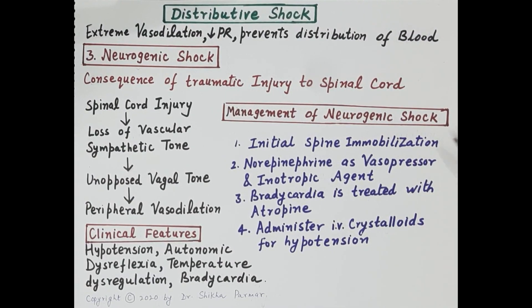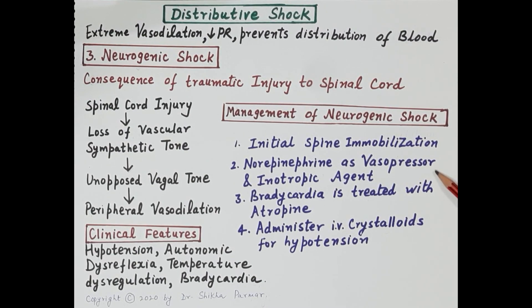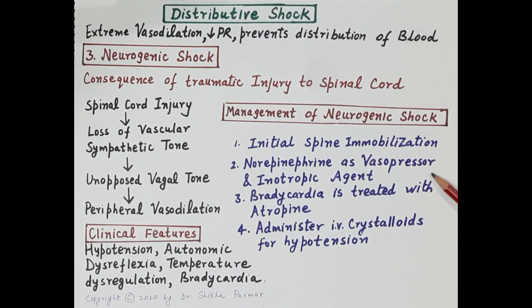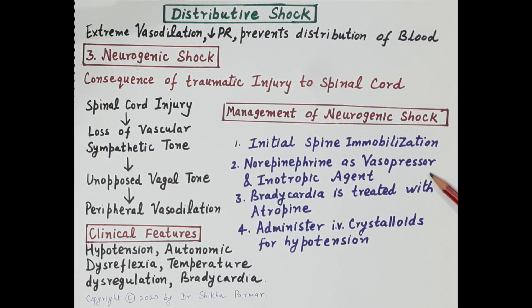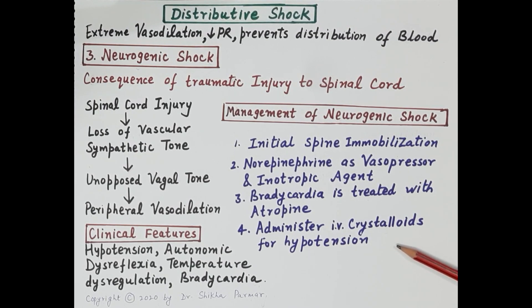Management of neurogenic shock is similar to other shocks, but because of the spinal injury, the most important initial step is spinal immobilization to prevent further damage. Norepinephrine is administered as a vasopressor and inotropic agent — it constricts blood vessels, increases peripheral resistance, increases blood pressure, improves tissue perfusion, and increases cardiac output by increasing force of contraction of cardiac muscles. Bradycardia from excessive vagal tone can be treated with atropine. Isotonic crystalloids like normal saline and Ringer's lactate are also administered.